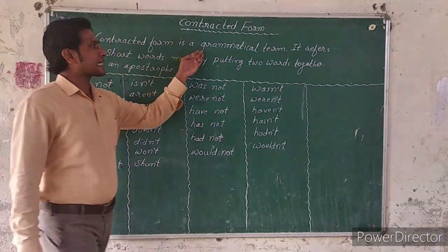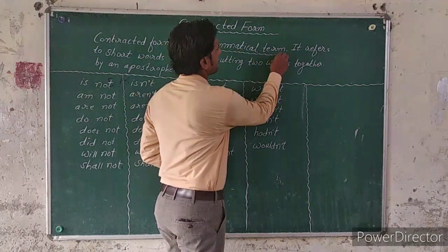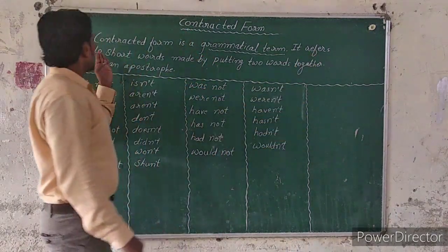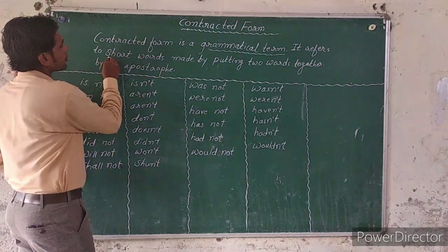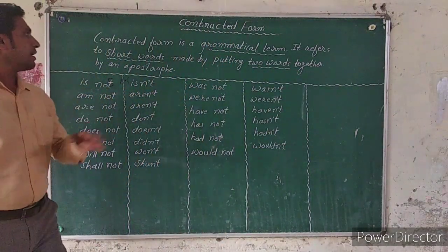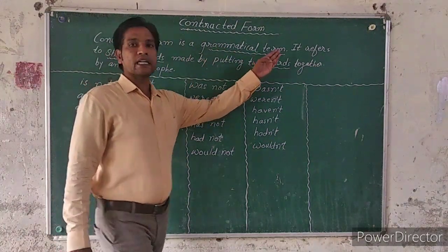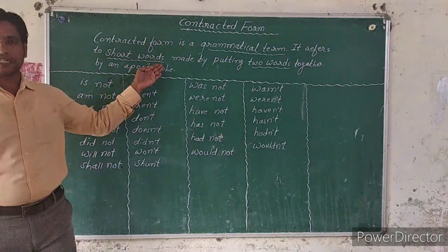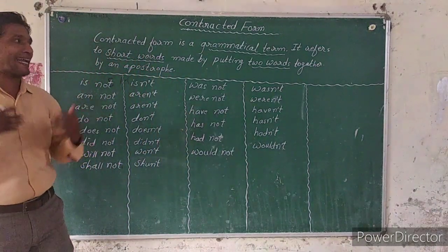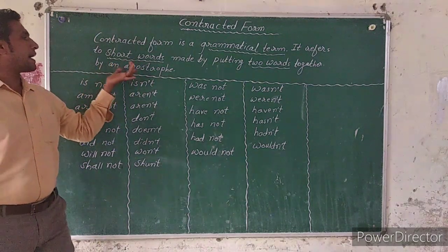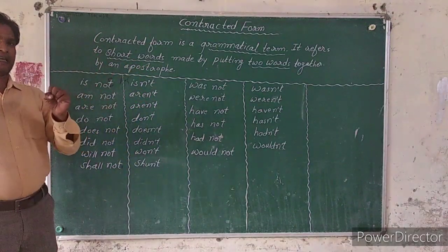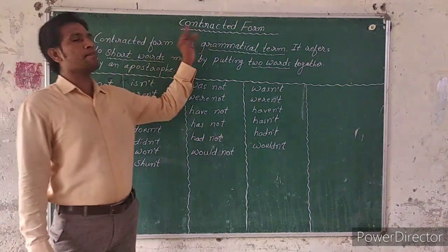Contracted form is a grammatical term. It refers to short words made by putting two words together. When we connect two words together, we call that a contracted form.